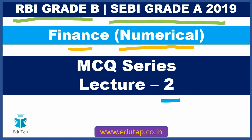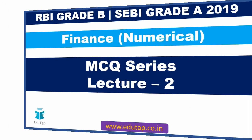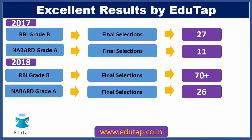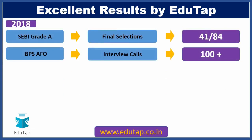Before jumping on to the first MCQ, let me share the excellent results produced by EduTap over the past few years. For 2017, we got 27 final selections in RBI Grade B and 11 final selections in NABARD Grade A. For 2018, we got over 70 plus final selections in RBI Grade B and 26 in NABARD Grade A. For SEBI Grade A 2018, out of 84 candidates selected, 41 were from EduTap. For IBPS Agriculture Field Officer, we got over 100 plus interview calls.